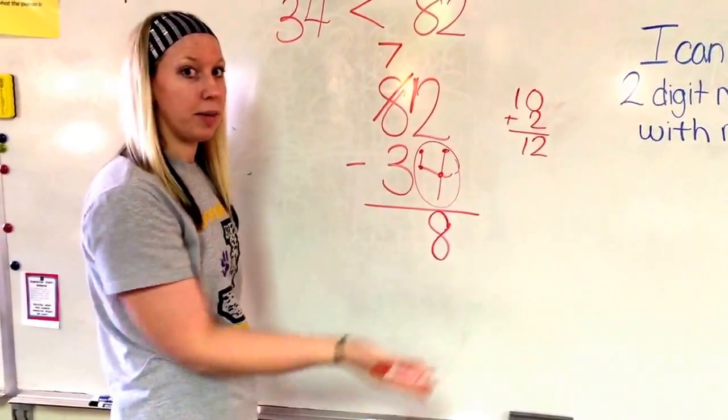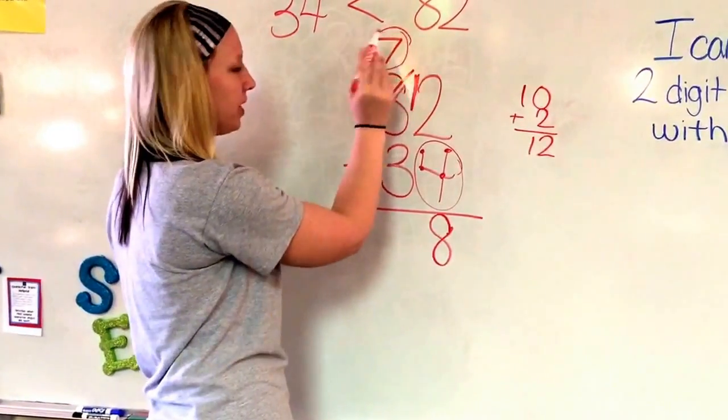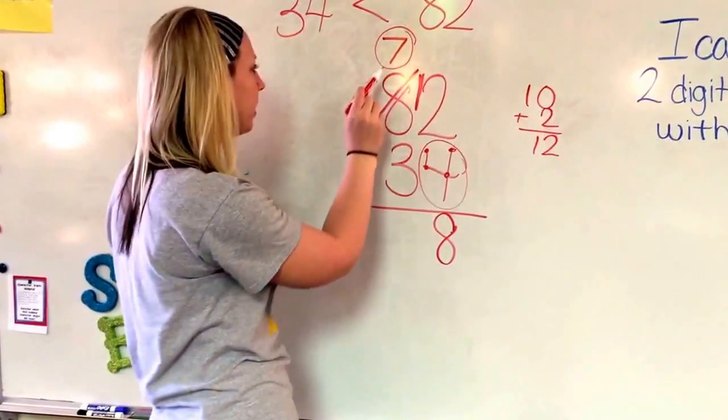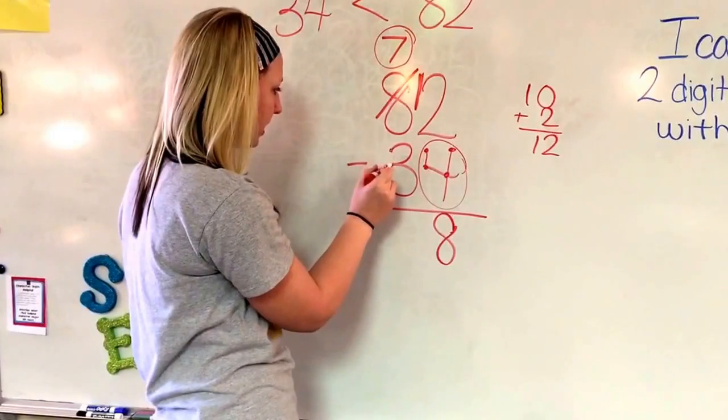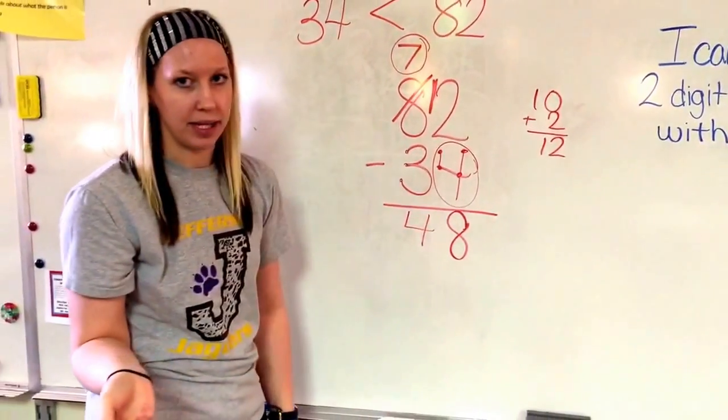Now I have to go to my tens column. And I have to find where is my bigger number. Oh, well, now there's more on top. So no need to stop. I don't have to borrow. Seven, six, five, four. And my number's 48. That's my answer.